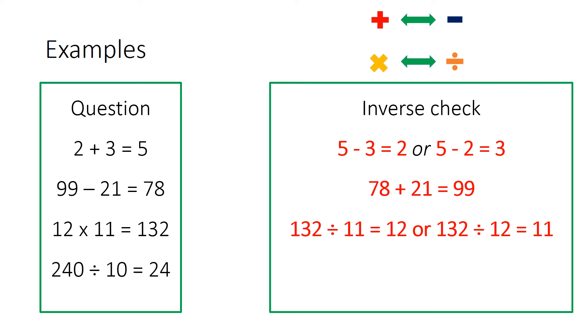And finally division sum, we are going to check with a multiplication. So we will do 24 multiplied by 10 which takes us back to 240. So they are some examples of inverse checks. If you're asked to check your answer they'll probably be looking for one of these or the following method.